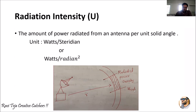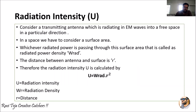W_rad is the radiated power density with respect to the selected area, and r is the distance between the antenna projecting the signal and that area. On the whole, radiation intensity U is given as U = W_rad × r², where U is the radiation intensity, W_rad is the radiation density, and r is the distance between the antenna and the surface area.